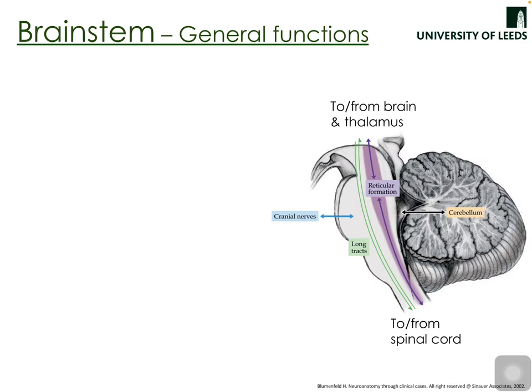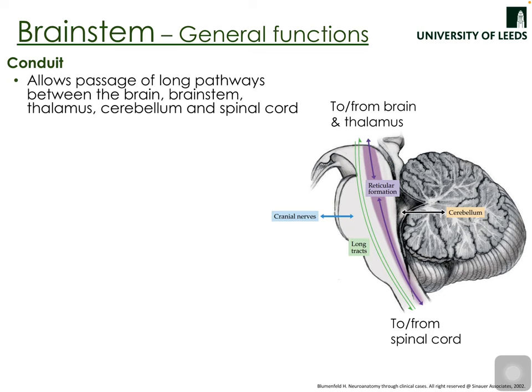Starting with the brainstem: the brainstem can act as a conduit. Many ascending and descending pathways — the long tracts — pass through the brainstem as they travel from higher brain centers towards the spinal cord, or from the spinal cord towards the brain. Some pathways also take origin in or end in the cerebellum, and specific nuclei in the brainstem mean some pathways can start or stop within the brainstem itself.